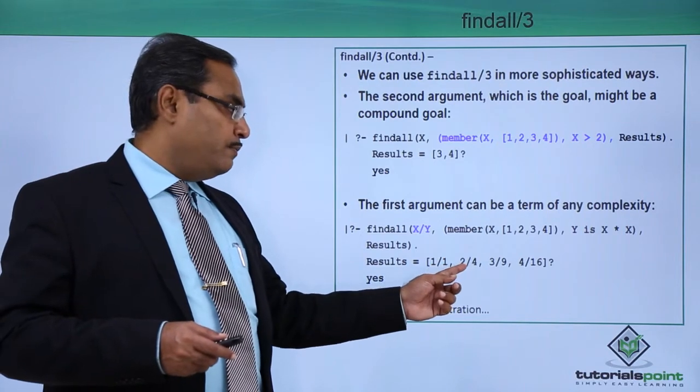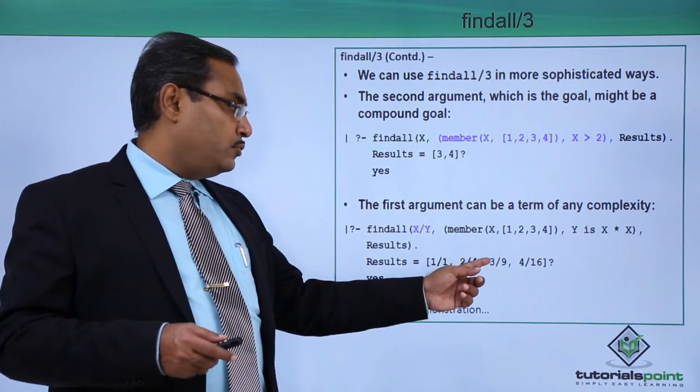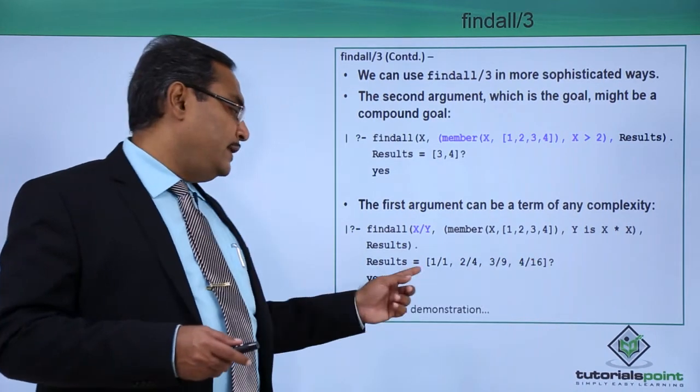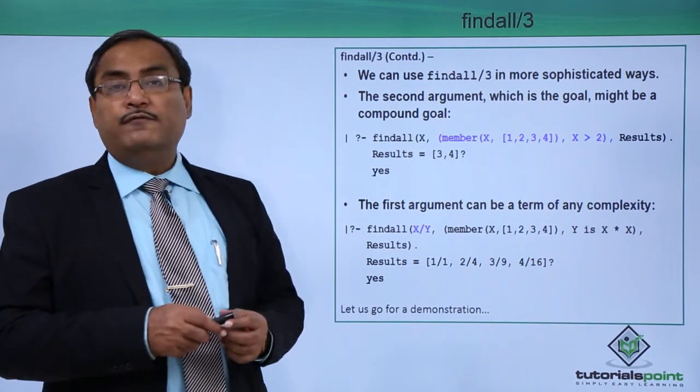So Results will have the form 1 by 1 square, that is 1, 2 by 2 square that is 4, 3 by 3 square that is 9, 4 by 4 square that is 16. In this way the results will be formed.